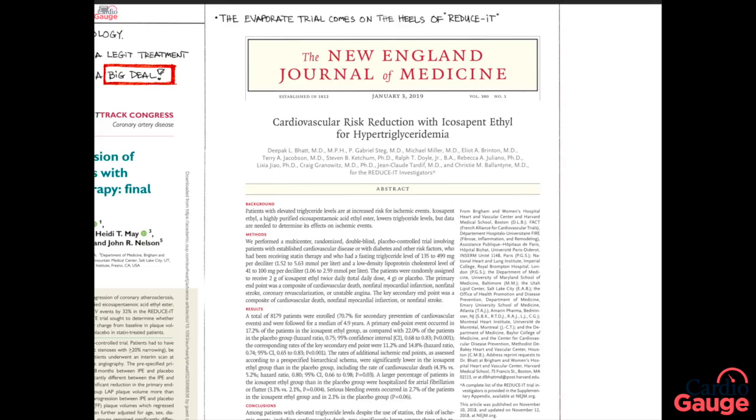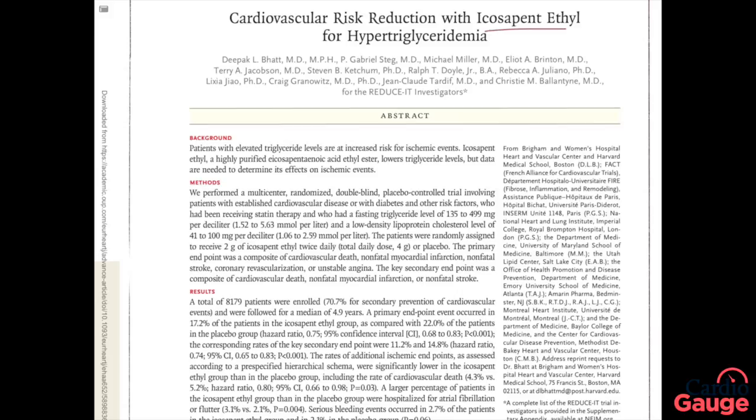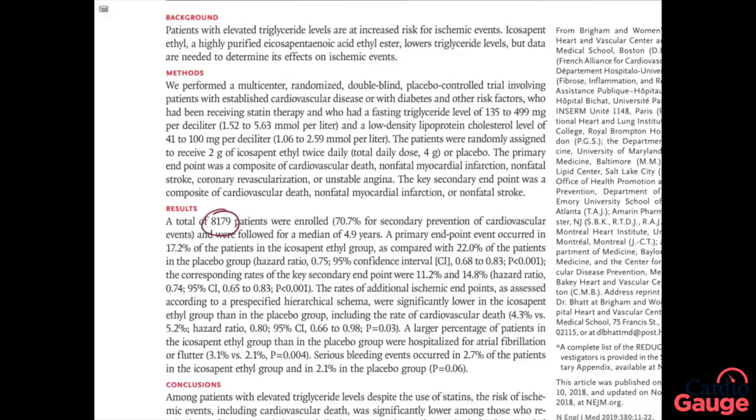The next trial I'm going to talk about is the REDUCE-IT trial. They used the same stuff, icosapent ethyl, so Vascepa 2 grams twice a day. They had people who had a prior diagnosis of coronary artery disease, over 8,000 of them, and they followed these people for five years. The people who got the medication had a 17 percent rate of stroke, heart attack, stenting, that type of thing, versus the people who got the placebo had a 22 percent chance of that happening. So that's a pretty big decrease from 22 percent down to 17 percent, about a 5 percent absolute decrease. Like in the EVAPORATE trial, these people all were on statin therapy as well.